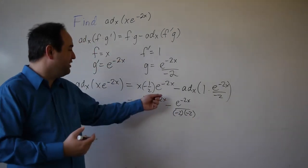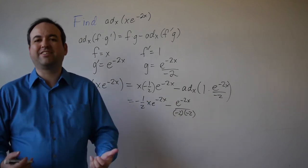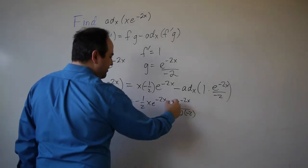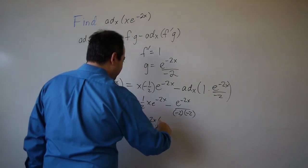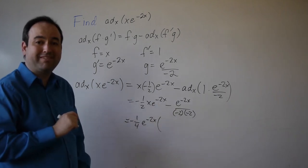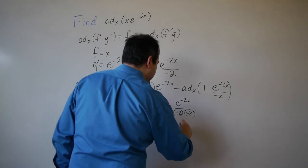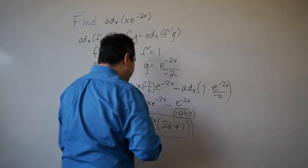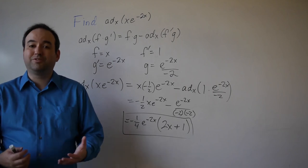Both of these terms contain e to the negative 2x, so some people like to factor that out. We can actually factor out negative one-fourth e to the negative 2x. When I factor one-fourth out of one-half, I get 2x, and here I just get 1.